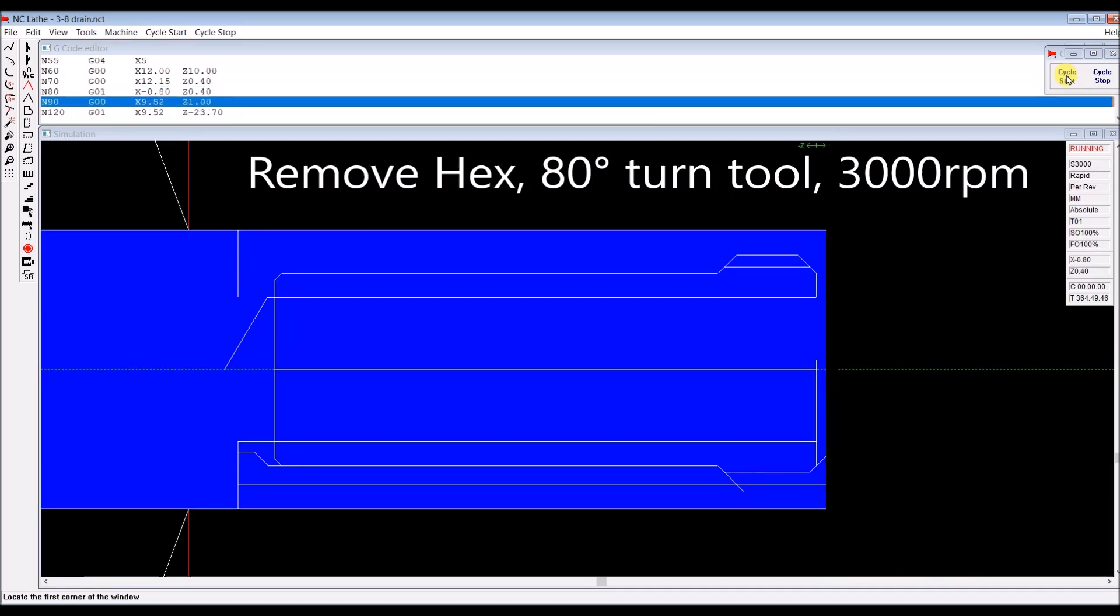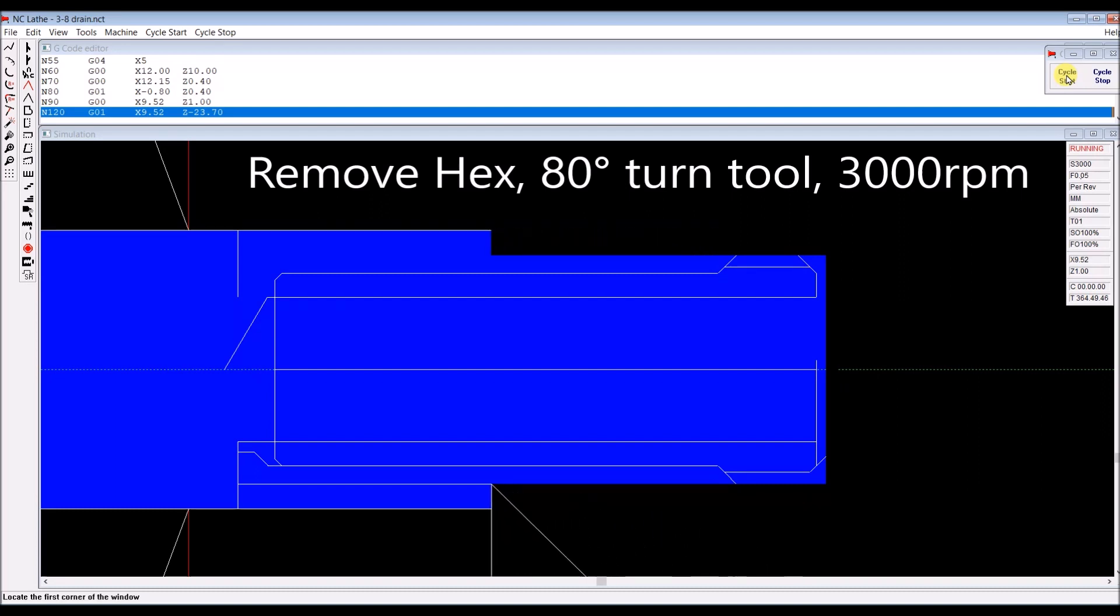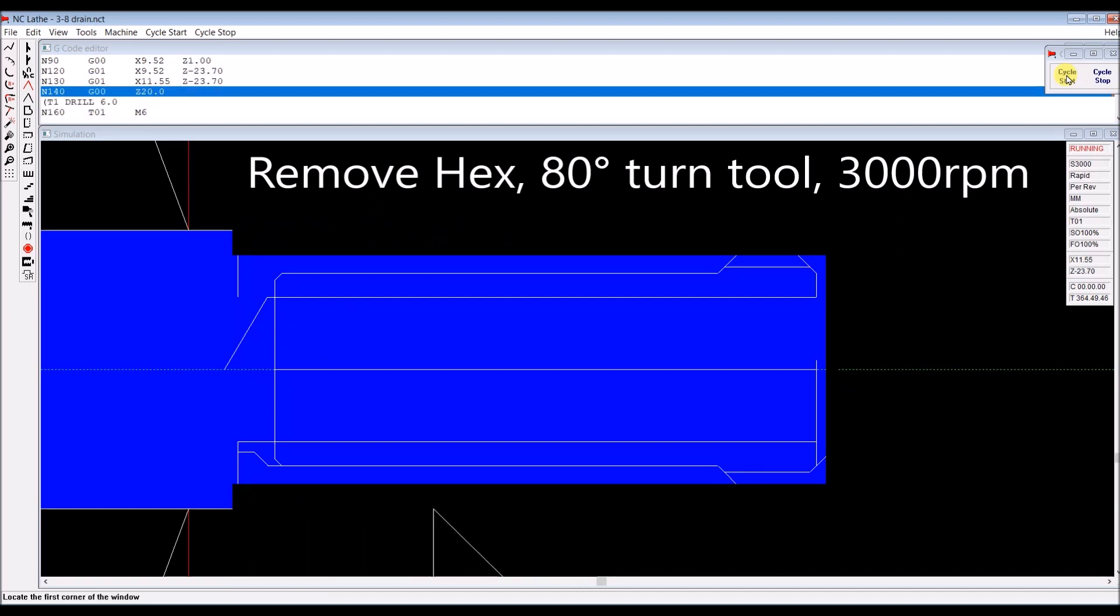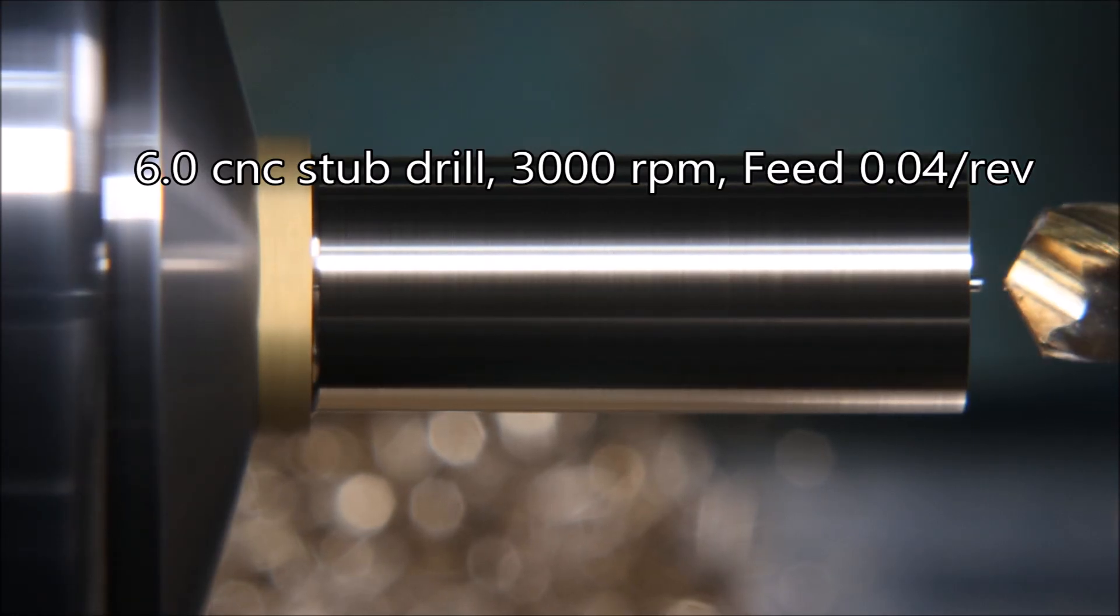And this is the simulation of what we just saw being machined. Now we drill using a CNC stub drill.